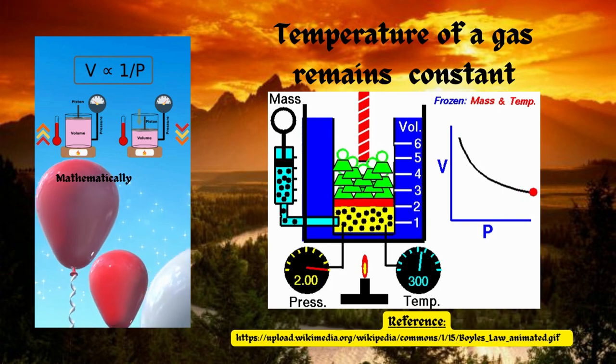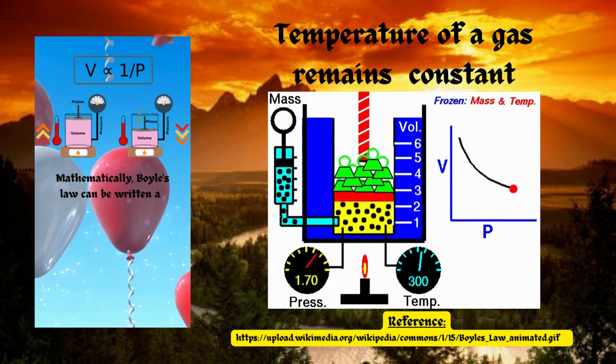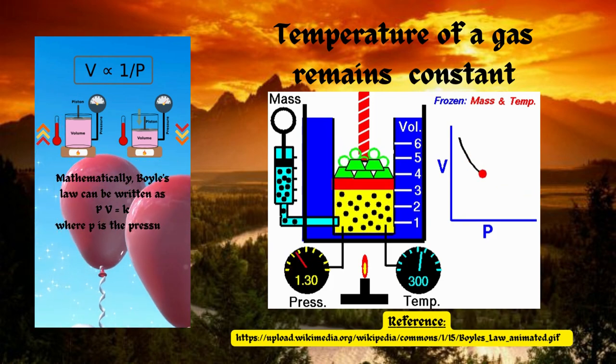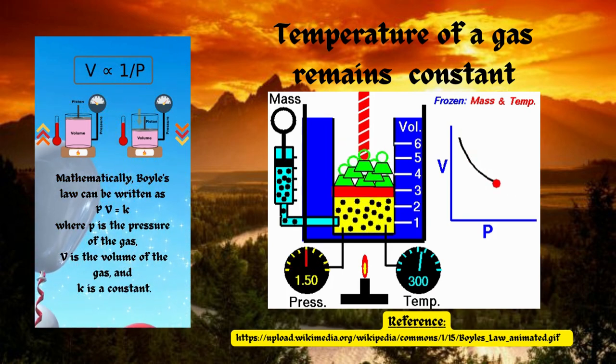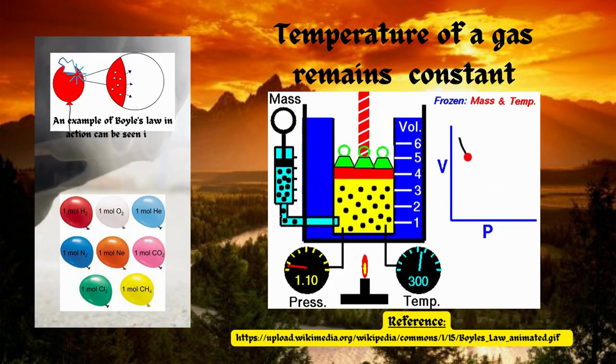Mathematically, P is inversely proportional to V. PV equals K, where P equals pressure of the gas, V equals volume of the gas, and K is a constant.